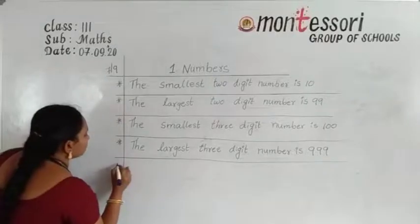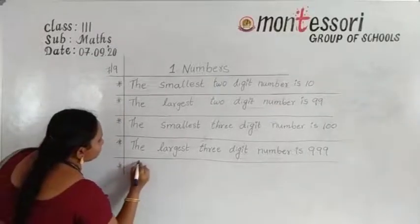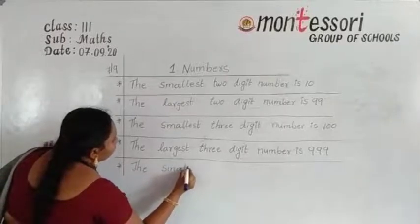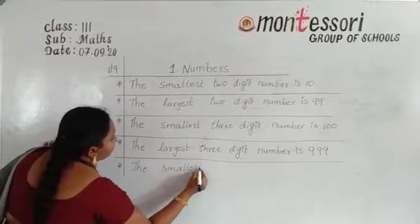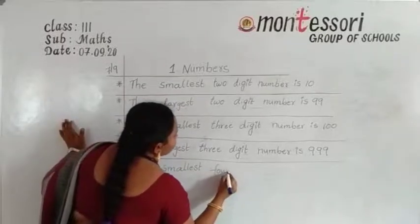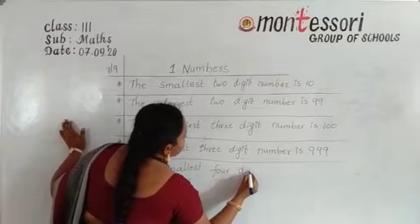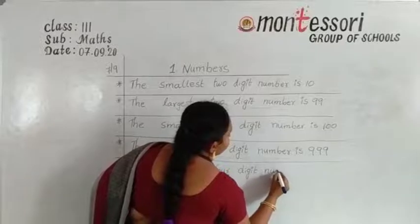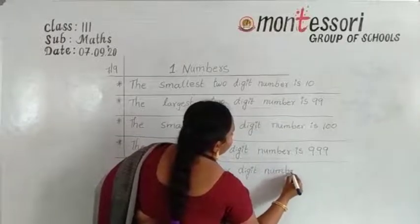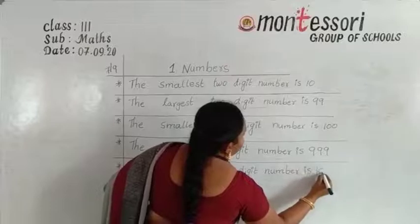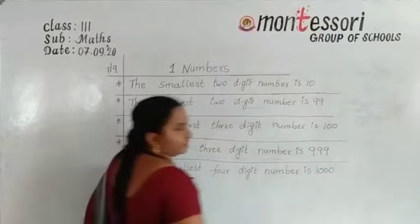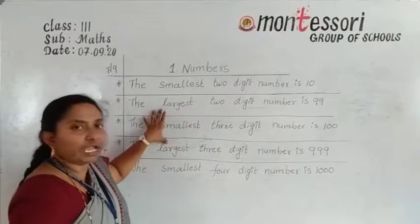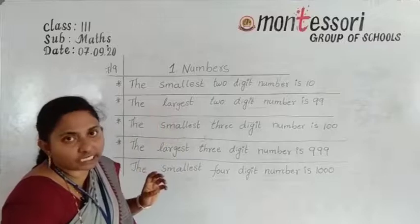Draw star marks with pencil — then only the classwork looks neat. The largest three-digit number is 999. Draw the margin with pencil. The smallest four-digit number is 1000. These are the points for your classwork. Copy them and send to your concerned WhatsApp group.